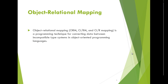So first, what is ORM? The full form of ORM is Object Relational Mapping. It can also be written as ORM, O/RM, or O/R mapping. Basically this is a programming technique for converting data between incompatible type systems in an object-oriented programming language.